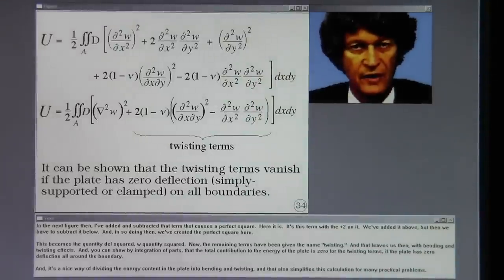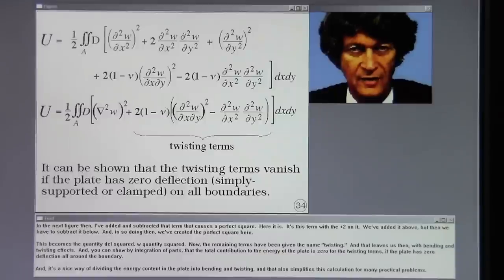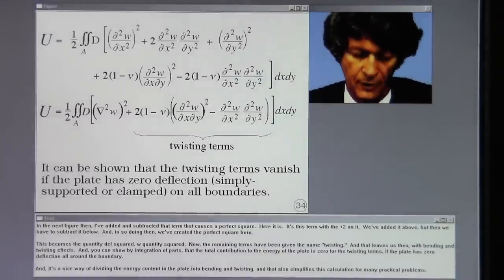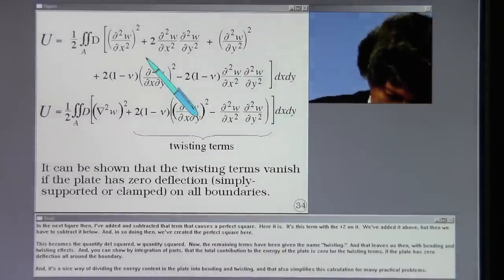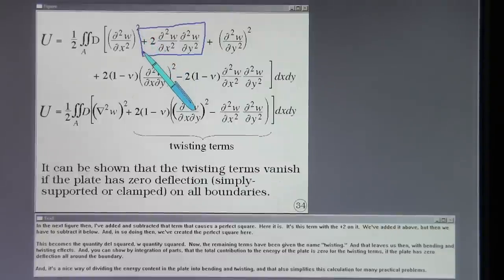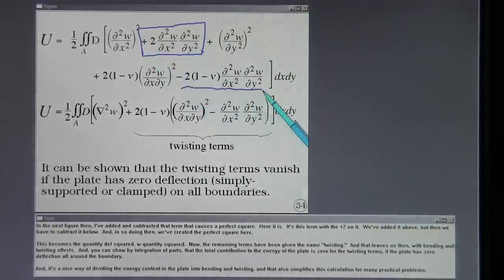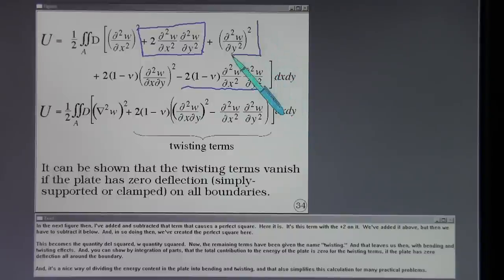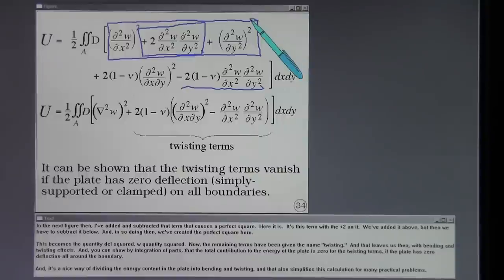In the next figure we'll work on this perfect square idea. In the next figure then I've added and subtracted that term that causes a perfect square. Here it is. It's this term with a plus two on it. We've added it above but then we have to subtract it below. And in so doing then we've created the perfect square here. This becomes a quantity del squared W quantity squared.